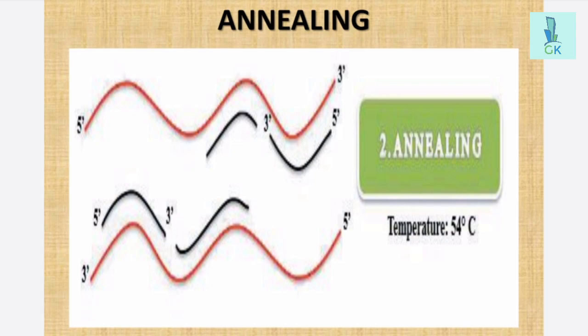Now it is interesting that which end of the parent strand should the RNA primer be formed. Primer will always come at 3' end of the parent strand. So what things are required for this process of annealing?